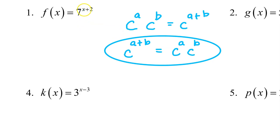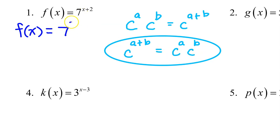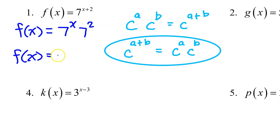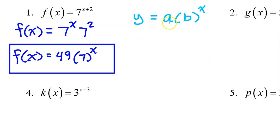So, 7 to the x plus 2 power — that's like c to the a plus b power. We can rewrite f of x as a multiplication problem: 7 to the x power times 7 squared. Of course, 7 squared is 49, and putting that in front gives us 49 times 7 to the x power. This fits the model y equals a times b to the x that we were shooting for.